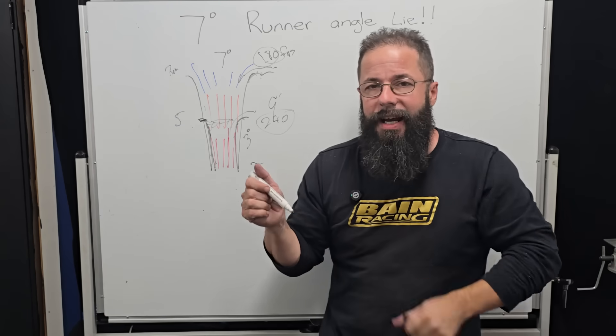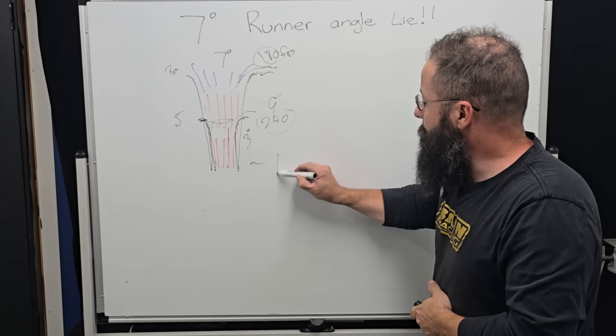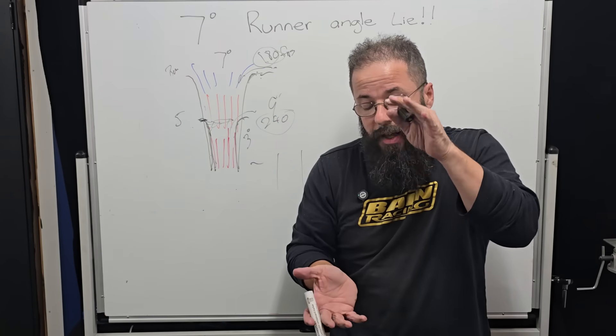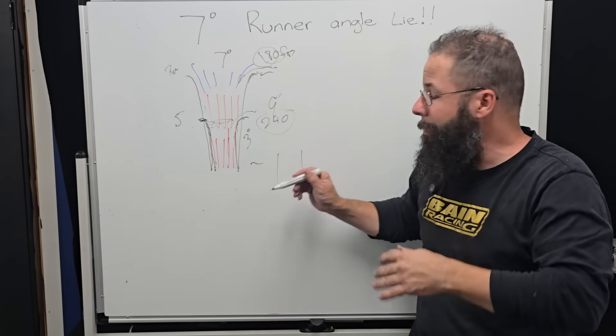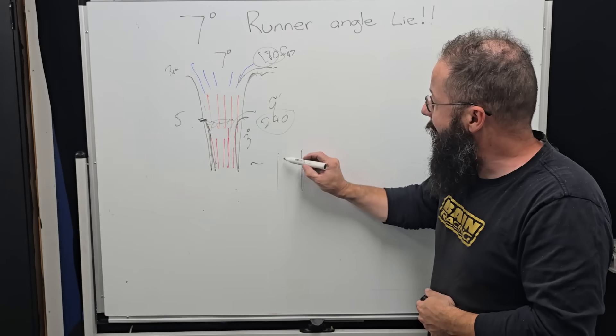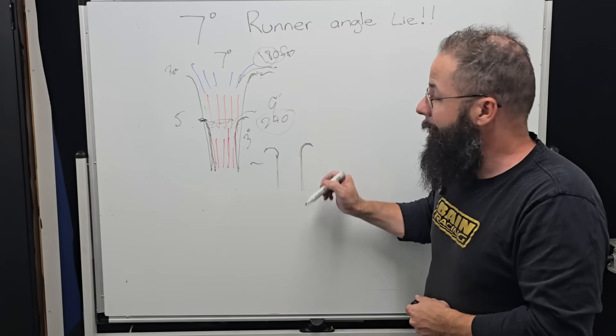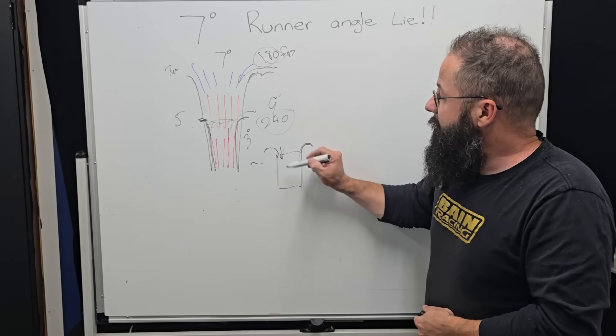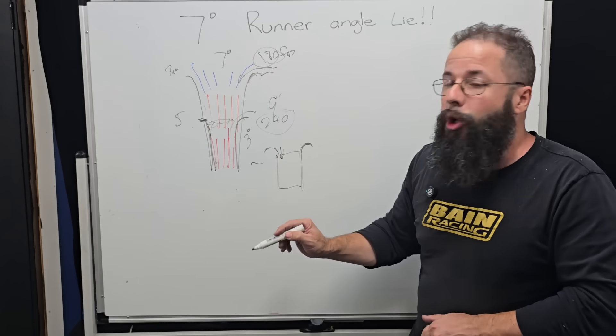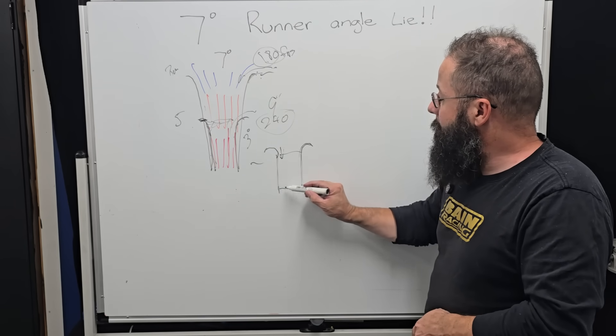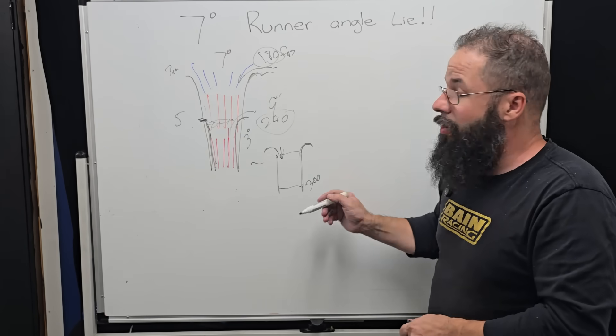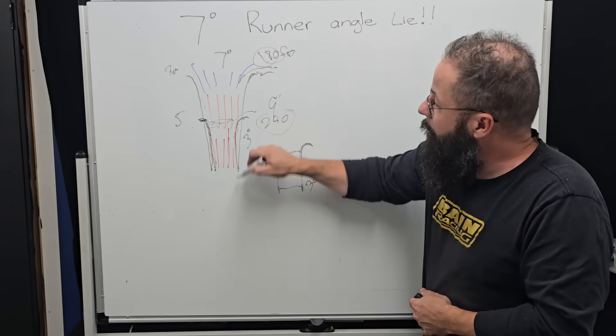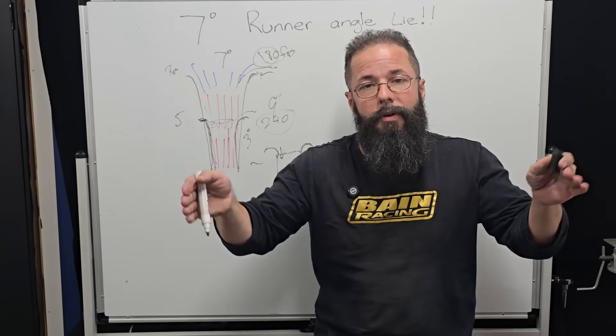So this 180 feet per second is much slower, so we don't need a big radius there, we only need a 5/16. But this 240, we need a bigger radius to turn the air. This is why you'll see shorter, or what I call suboptimal lengths, with bigger radiuses. We see this in ITBs with parallel trumpets. What they're trying to do, because they don't have a lot of runner length, they can't develop a lot of inertia really over the proper length and use wave tuning, so they run a parallel bell with a really big 5/8 radius on the top.